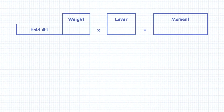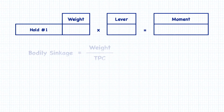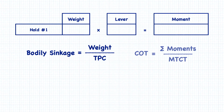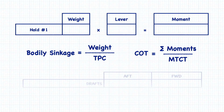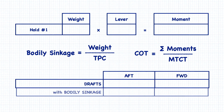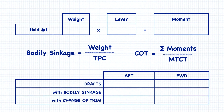Most calculations of draft and trim follow this basic structure. Without too much trouble, this process can be rearranged mathematically to do all kinds of things, such as loading weights to achieve a certain draft, loading to keep the aft draft constant, and finding amounts to load to achieve a desired change of trim.